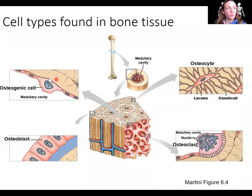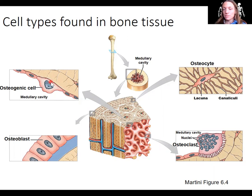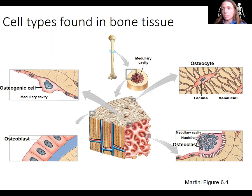Osteogenic cells are within the endosteum that surrounds the spongy bone tissue, and these surround the medullary cavity. These are stem cells — they are the only type of bone cells that can actually go through mitosis, reproduce, divide, and make more bone cells. So these are going to be important when we talk about bone growth.